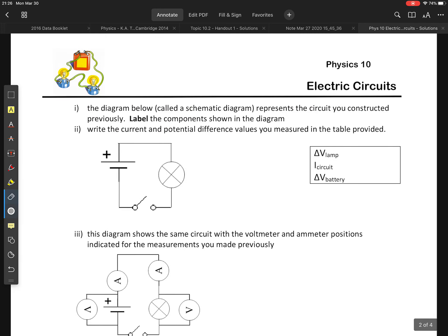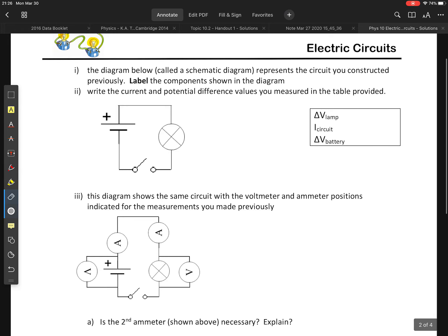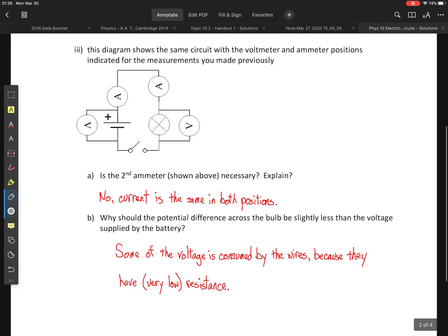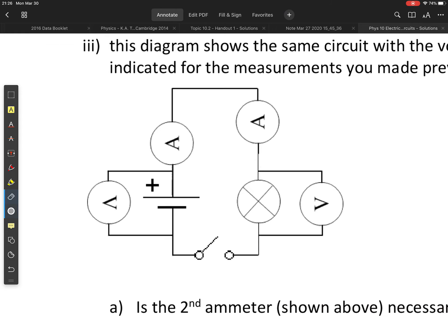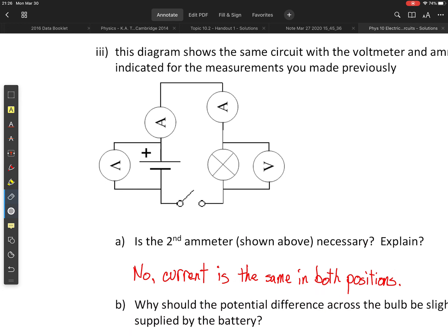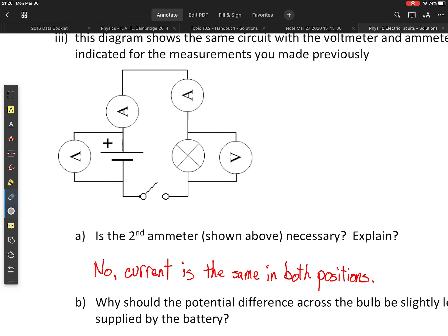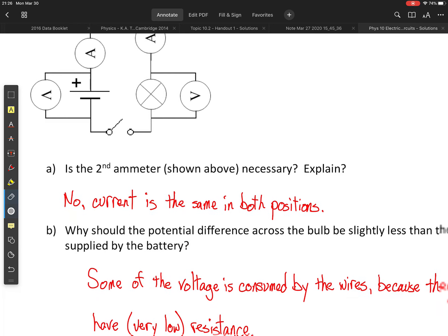Okay, this is stuff that you are supposed to do. Okay, so is the second ammeter as shown above in this diagram necessary? And the answer is no, it is not. The current should be the same in this simple loop, as we discussed previously.